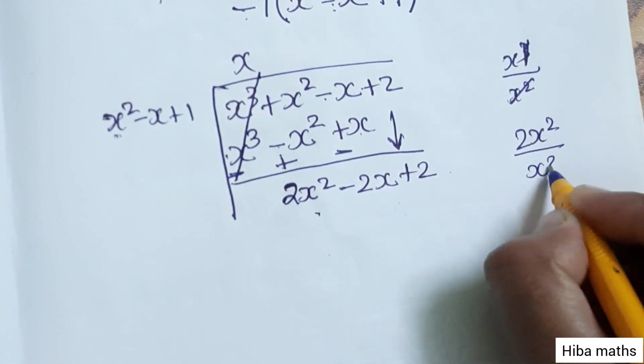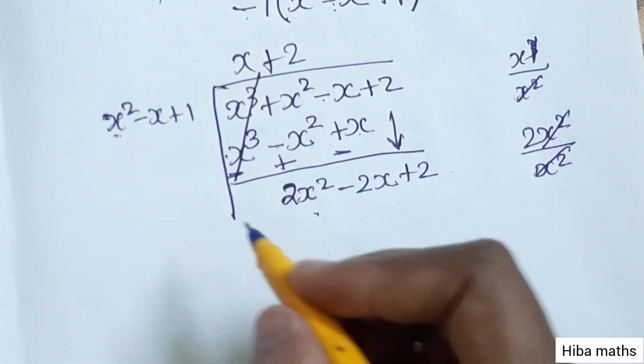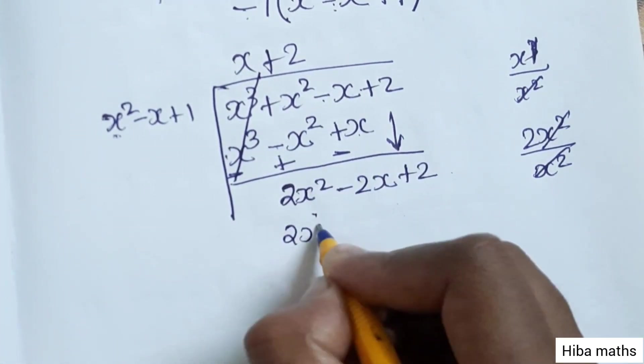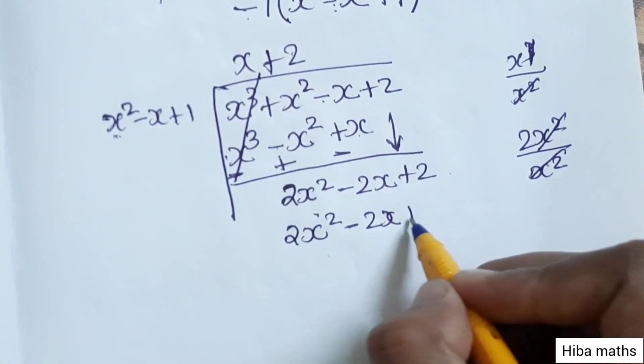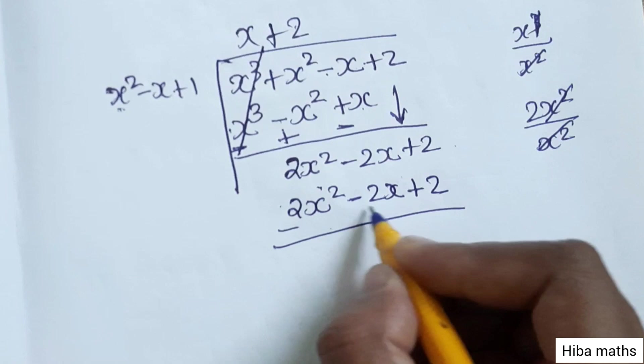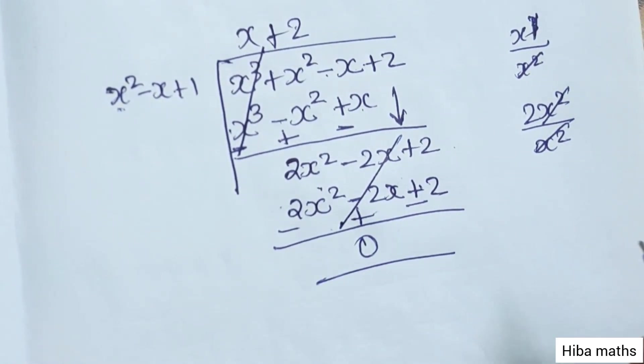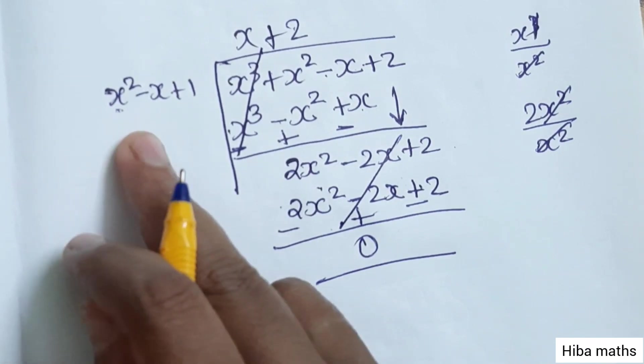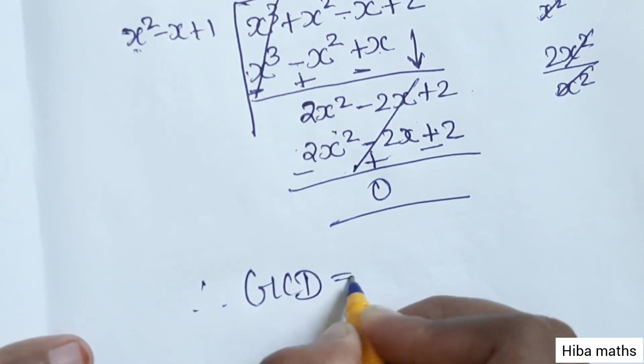2x² divided by x² - the x² cancels. Multiply 2 into x² - x + 1 to get 2x² - 2x + 2. Subtracting, the terms cancel and the remainder is 0. So the final answer is x² - x + 1. Therefore, GCD is equal to x² - x + 1.